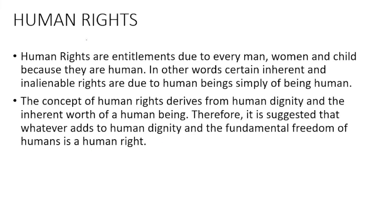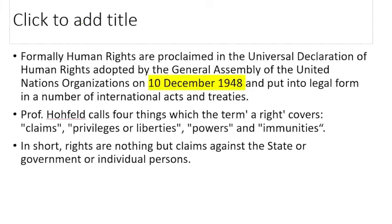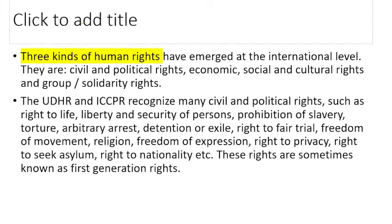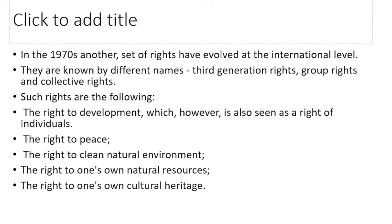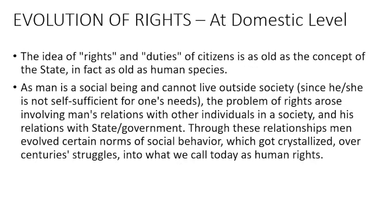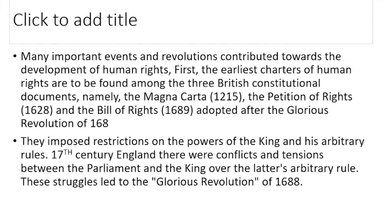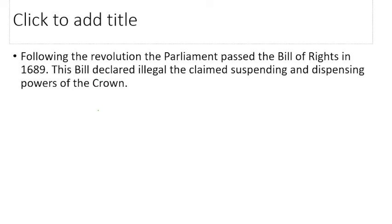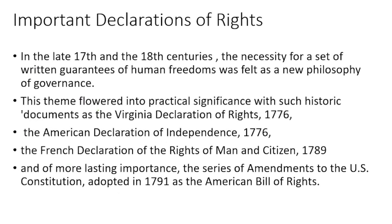Human Rights — this was the introduction. I had given you all the information. And now we also have an official declaration, an official proclamation. How did human rights happen? We are just discussing evolution. What was the background story? What is the nature of human rights? How did the evolution of rights happen at the domestic level? And internationally, what events happened? American Revolution, Bill of Rights, Magna Carta, the Glorious Revolution — these were all the things that happened.